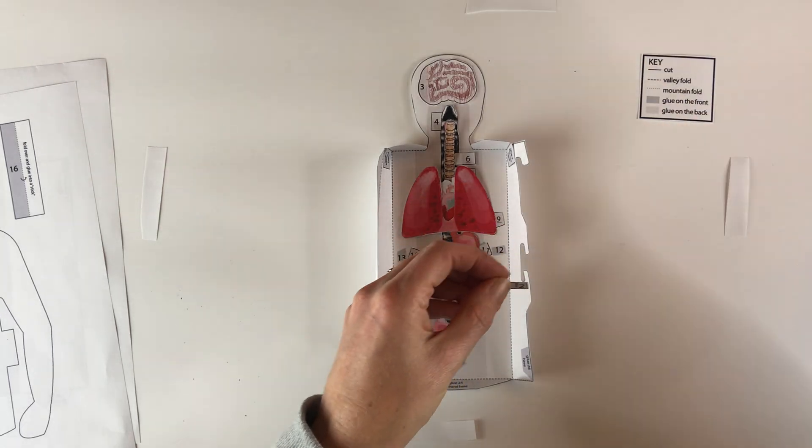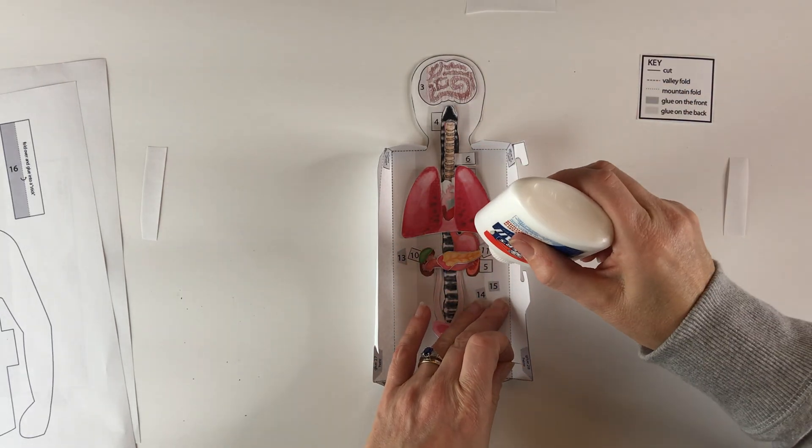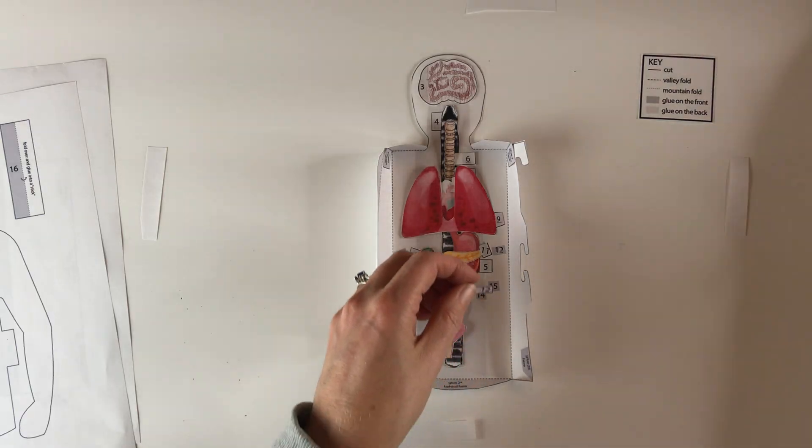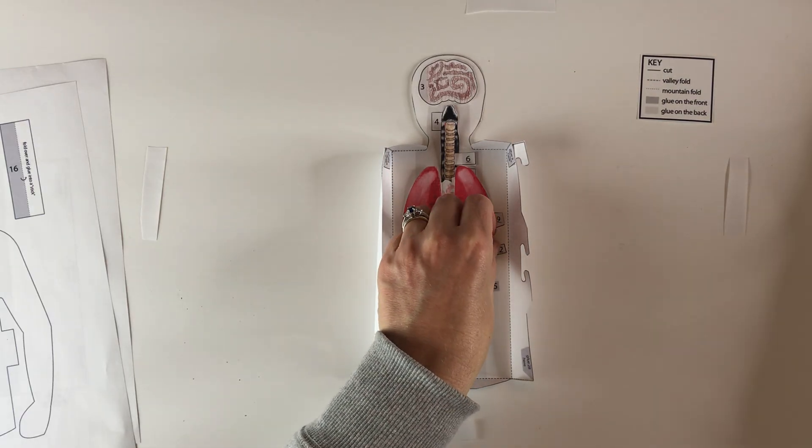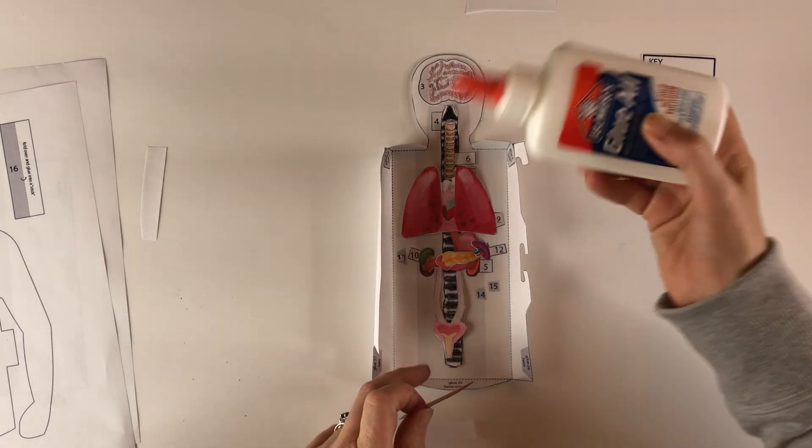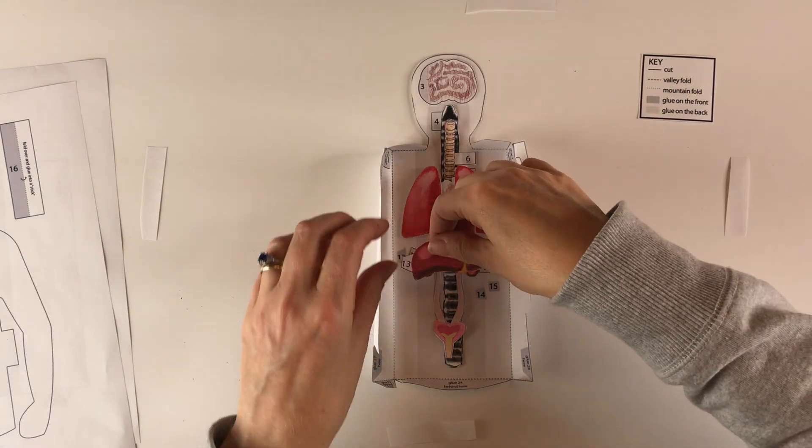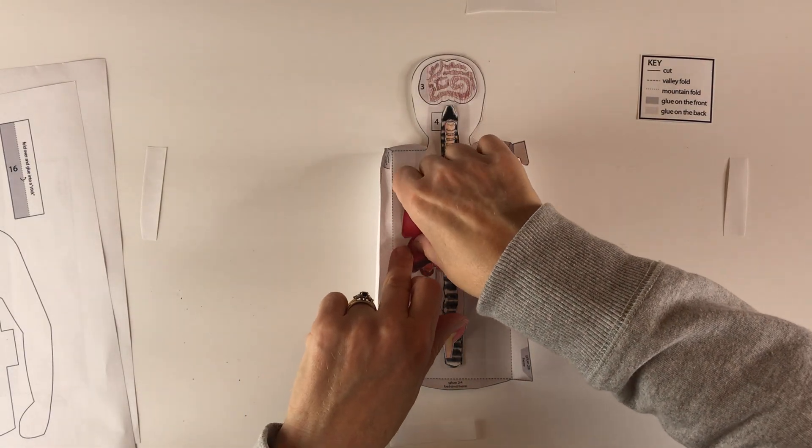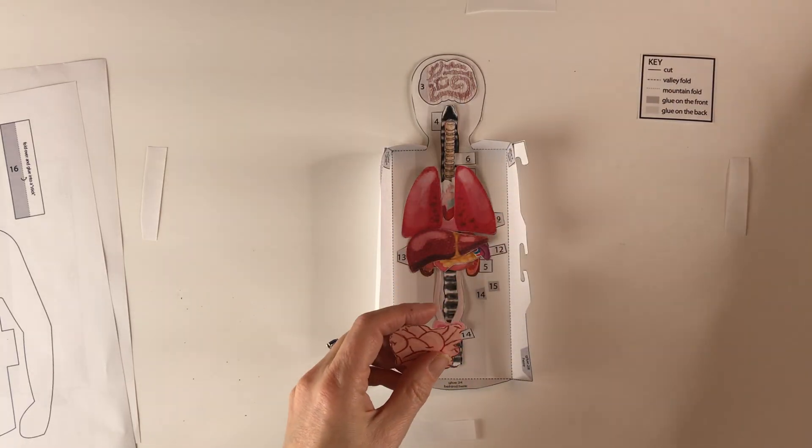Eleven is the pancreas. Twelve, the spleen. Liver.